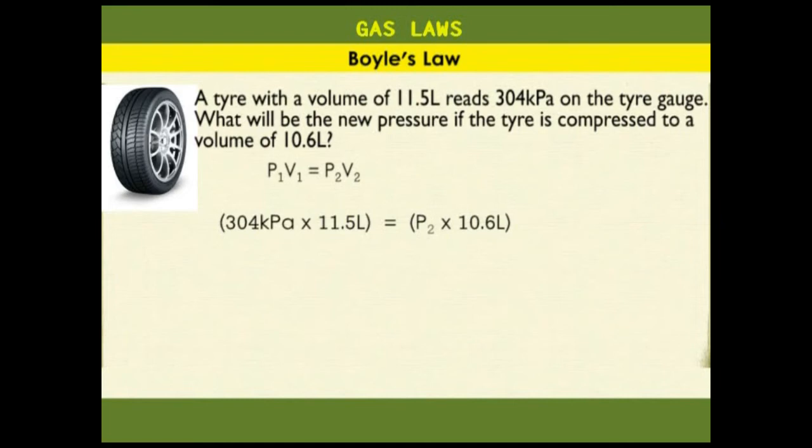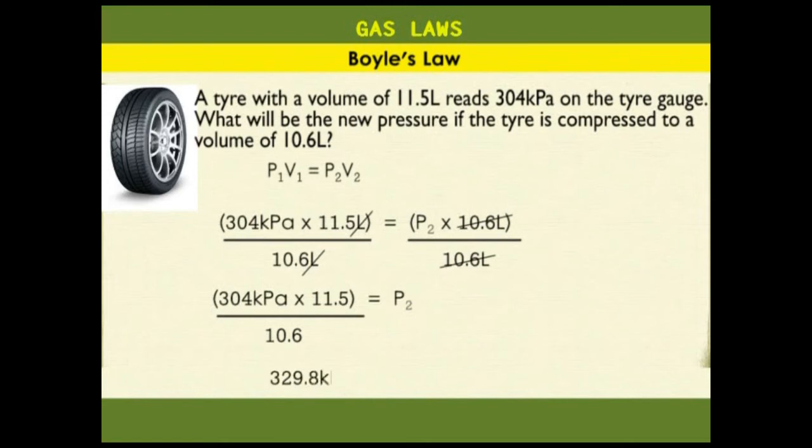To solve for P2, we divide both sides by 10.6 liters. 10.6 liters cancel out. Liters cancel out here. 304 kilopascal times 11.5 over 10.6 equals P2. 329.8 kilopascal equals P2, which is the same as P2 equals 329.8 kilopascal.